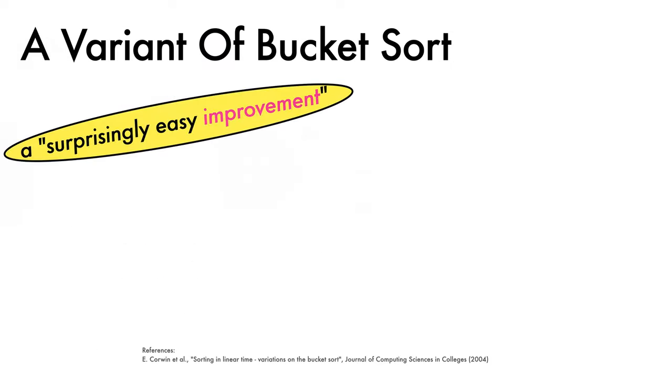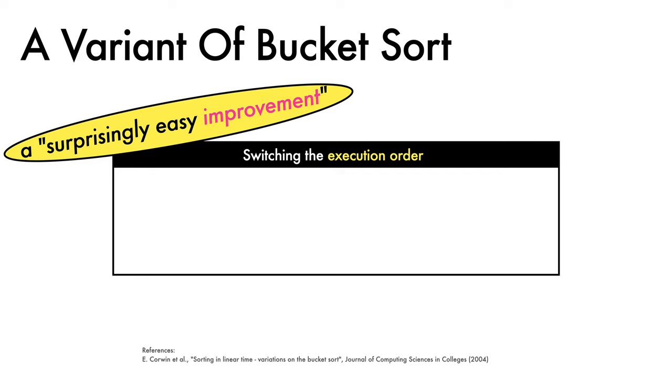One surprisingly easy improvement described by Cormen and Leiserson to accelerate bucket sort is to switch the execution order of the algorithm. In conventional bucket sort, we perform a scatter, sort each bucket, then gather the results.